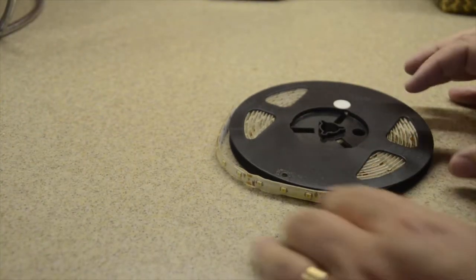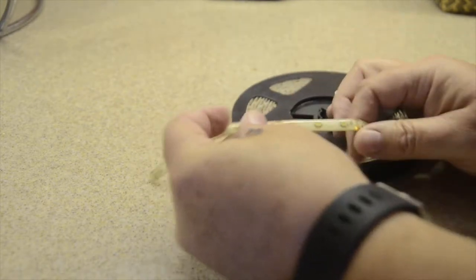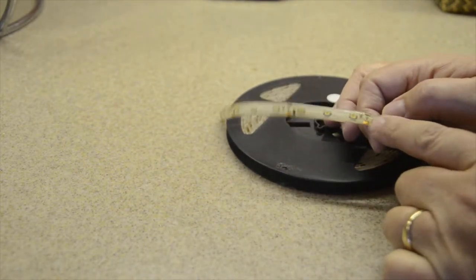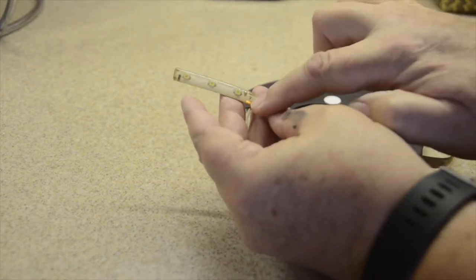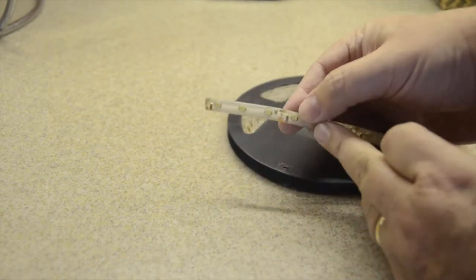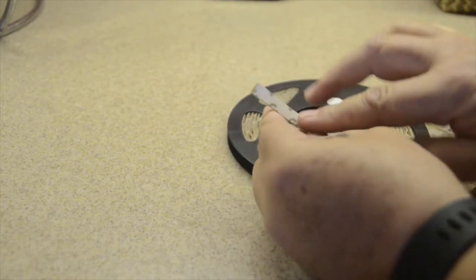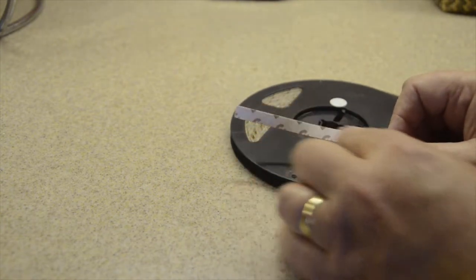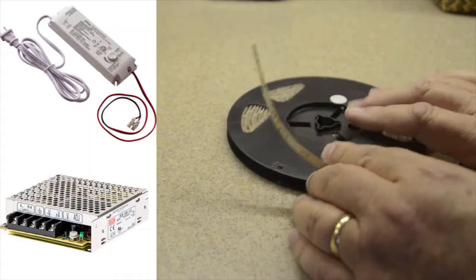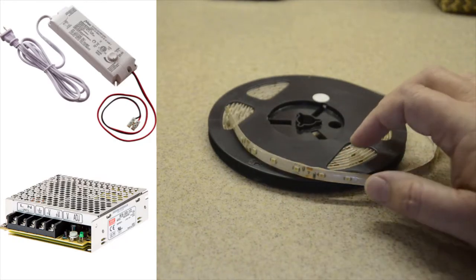So what I ended up using were these LED strip lights. These can be cut where it shows you, and there's solder points on the cut points where you have your plus and minus. It has an adhesive on the back that will stick up underneath the cabinet, and what this does is it wires up to any type of 12 volt power supply.